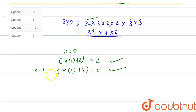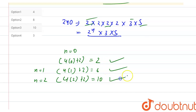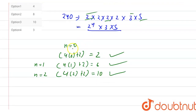If I put n equal to 2, I get 4(2) plus 2 equal to 10. Since 5 × 2 = 10, and both 5 and 2 are factors of 240, 10 is also a factor. That is our third solution in the form 4n plus 2.